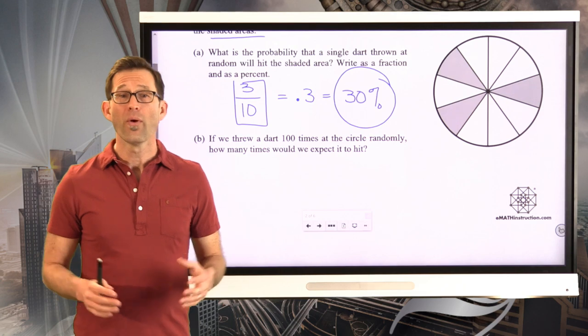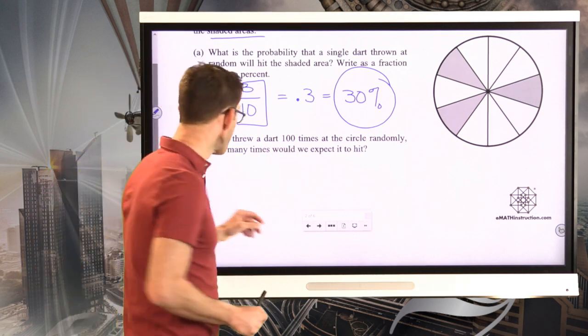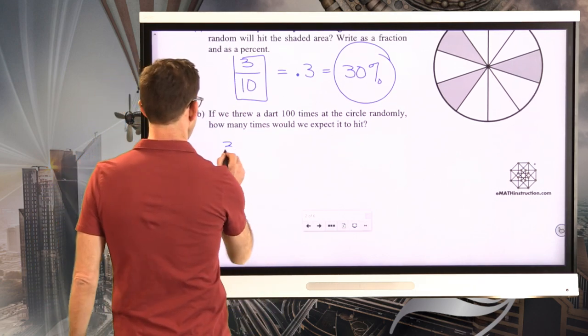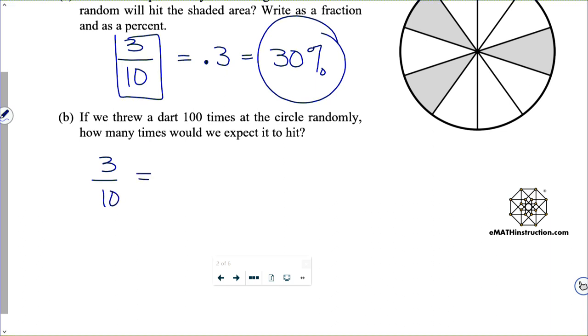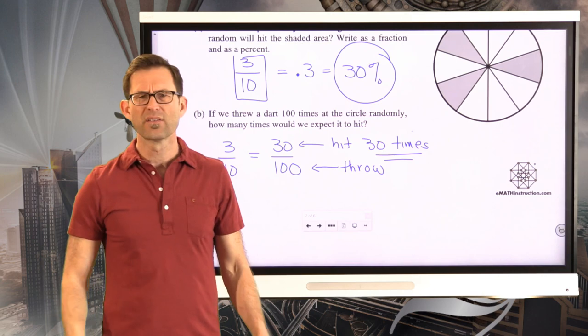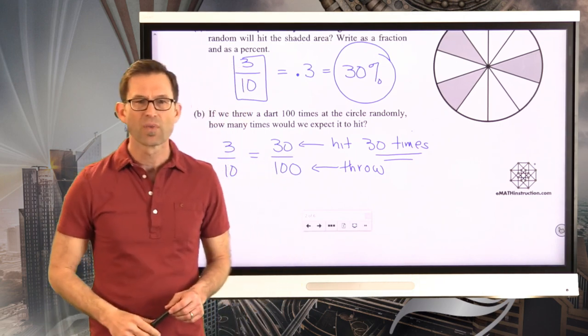Well, the whole point is, if our probability is three tenths, that's the same as 30 out of 100. So that means if we throw it 100 times, we would expect it to hit 30 times. So we would expect it to hit 30 times.